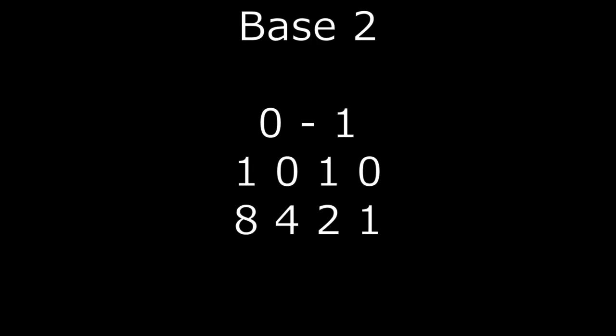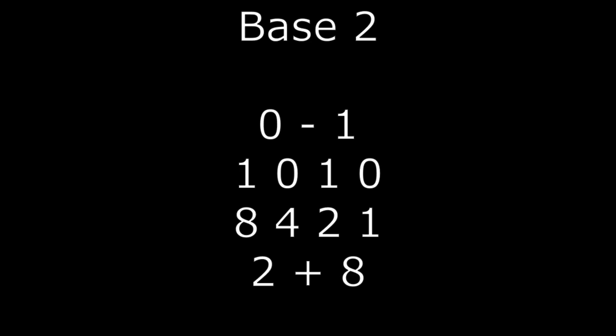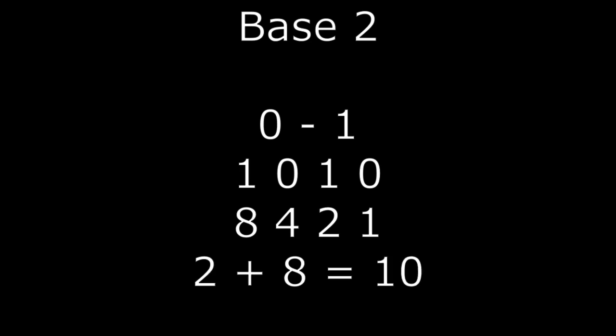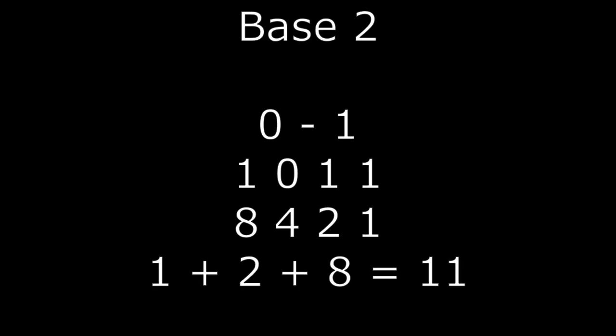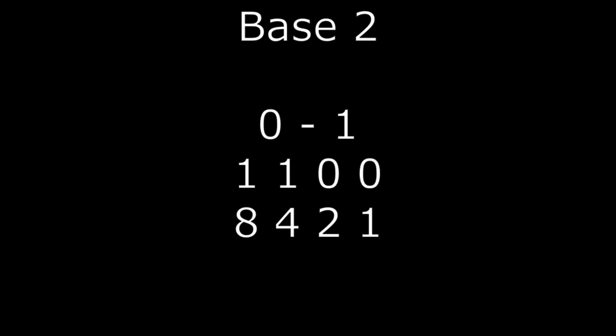Then you can just add all the places together. So 0 in the 1s place, a 1 in the 2s place, a 0 in the 4s place, and a 1 in the 8s place — this is 2 plus 8, which is 10. So 1010 is 10 in binary. If you want to add one more, it becomes 11, or 1011. Add one more, you get 1100: a 0 in the 1s place, a 0 in the 2s place, a 1 in the 4s place, and a 1 in the 8s place — 4 plus 8 is 12. So we know that 11 plus 1 equals 12.